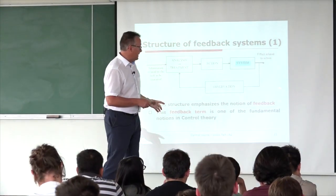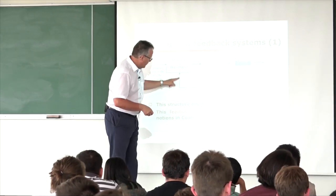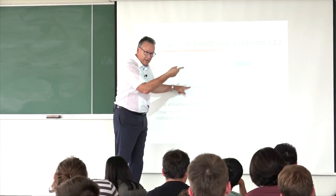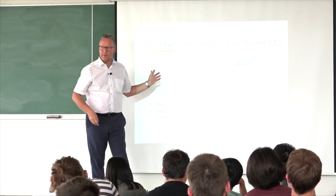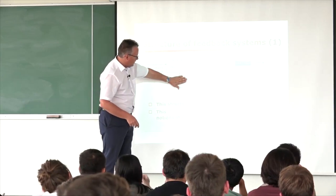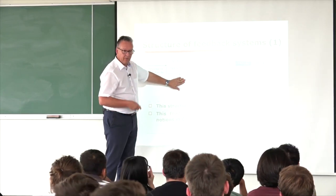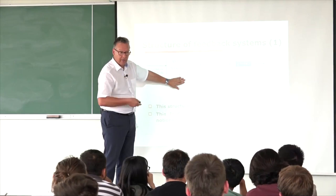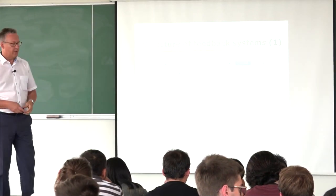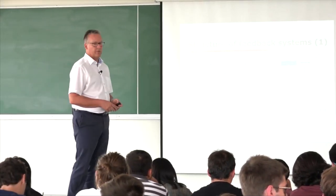If my system is not within a feedback scheme — if I open the loop — I have no feedback and cannot reject disturbances, because I'm not aware of them. So this feedback is the crucial notion of what we want to learn about control systems. This is the fundamental notion of control theory.